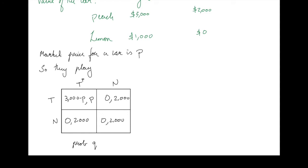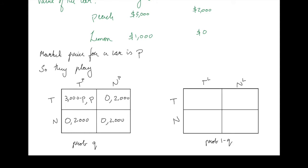We'll index these actions by P to indicate the type. When it's a lemon, they play a slightly different game. The actions are the same for the buyer, but the payoffs are different, and it's only the seller who knows what those payoffs are. With probability 1-Q, if they transact, the buyer gets $1,000 minus P and the seller gets P; otherwise they get 0, because the car is worth nothing to the seller if it's a lemon. The seller knows which of these two games they're playing; the buyer only knows they're playing the peach game with probability Q and the lemon game with probability 1-Q.